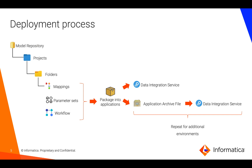A typical deployment process is as follows. There are various objects such as mappings, workflows, and parameter sets inside the model repository. When a developer is ready to move these to another environment, they create an application, add the mappings, workflows and other objects into it. This application can be deployed directly to a data integration service or to a file called an Application Archive file. The file can be stored in version control systems such as Git and eventually deployed to a data integration service, and this process can be repeated across various domains.